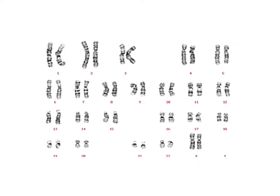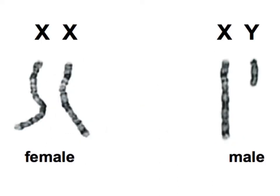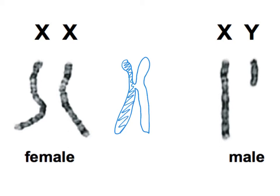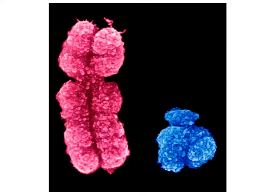Looking at this photograph, you should be able to work out from the 23rd pair — two large chromosomes, so two X's — that makes that person female. Whenever chromosomes are viewed, they're just about to divide, so you can see the original chromosome and its copy. The photograph shows the X on the left and the tiny Y chromosome on the right.